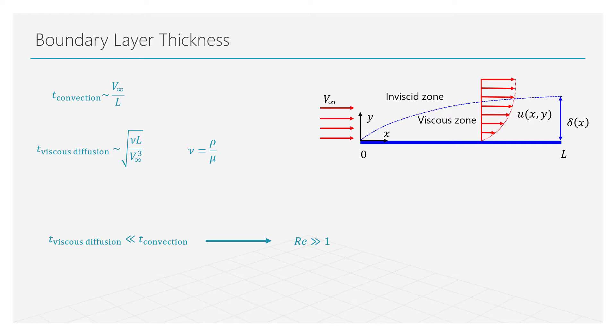A Reynolds number larger than one means that the convective effects are more significant than the viscous effects. In our analysis, we will assume that a boundary layer is thin for Reynolds number larger than 1000.